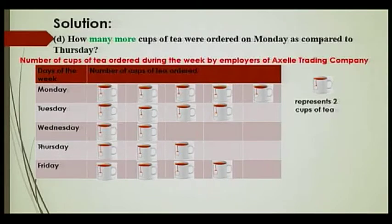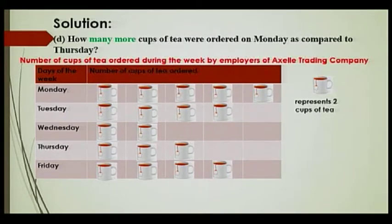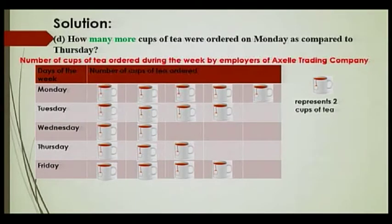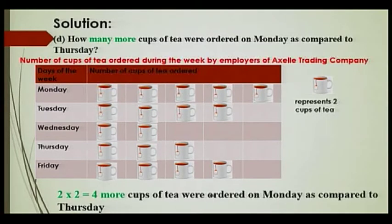Part D: How many more cups of tea were ordered on Monday compared to Thursday? On Monday we have five cups and on Thursday we have only three cups, so there are two more cups. Two times two — remember one cup represents two cups of tea — so we have four more cups of tea which were ordered on Monday compared to Thursday.